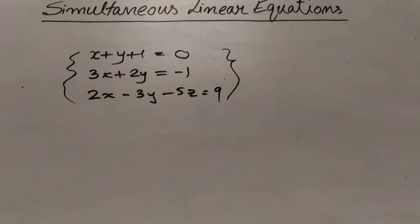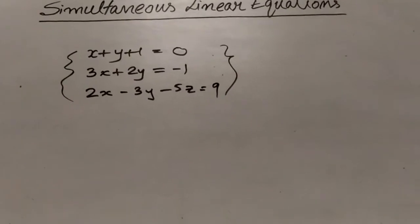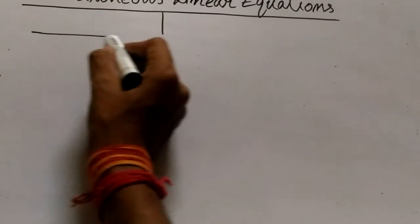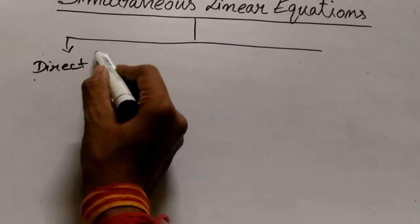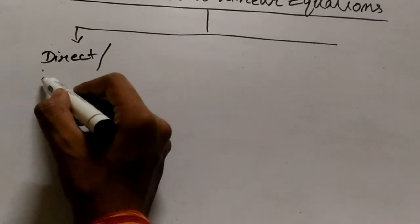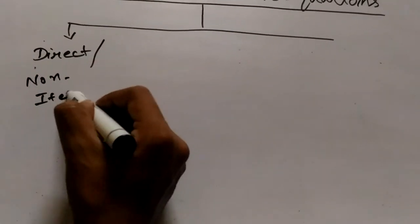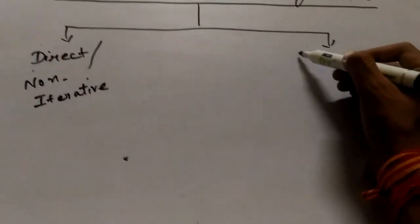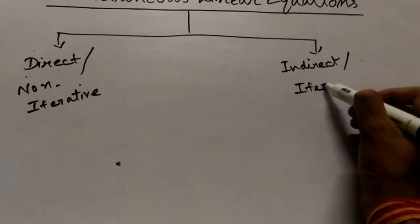Now, there are various methods to solve simultaneous linear equations. These methods can be divided into two broad categories: the first one is the direct method, also called the non-iterative method, and the second category is the indirect or iterative method.